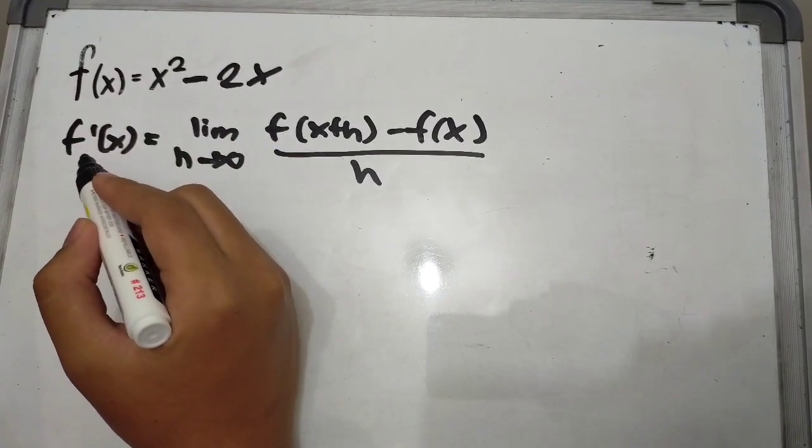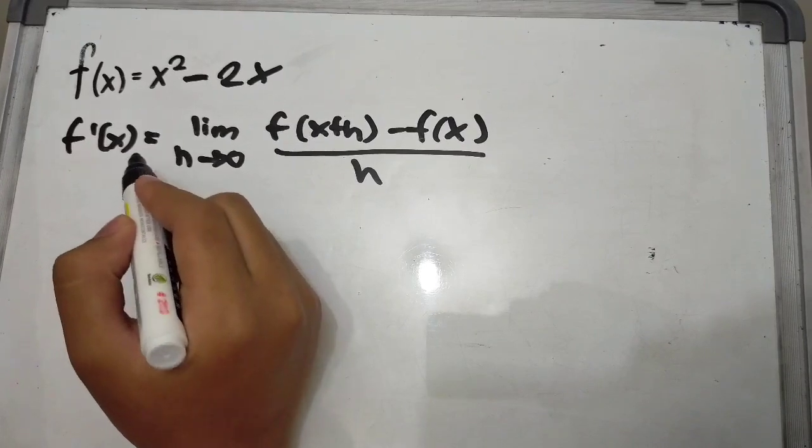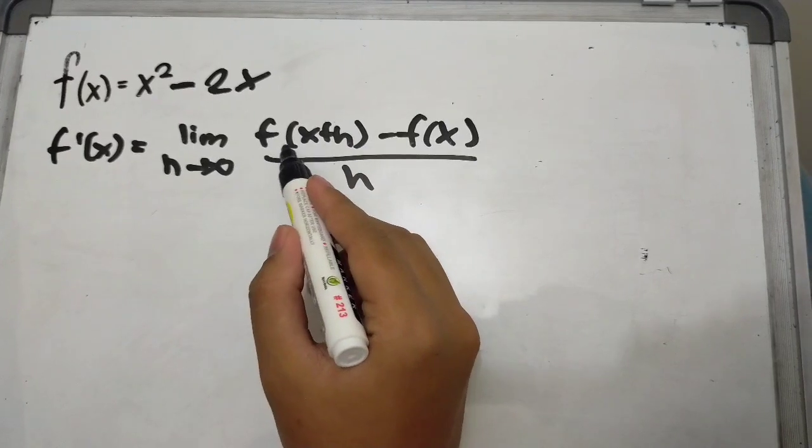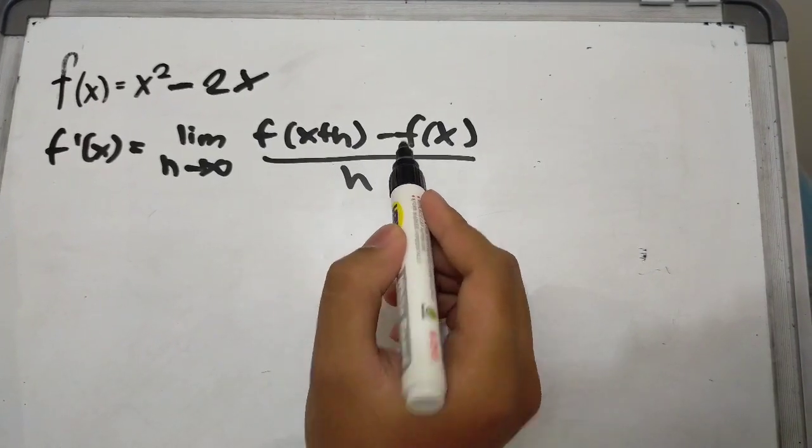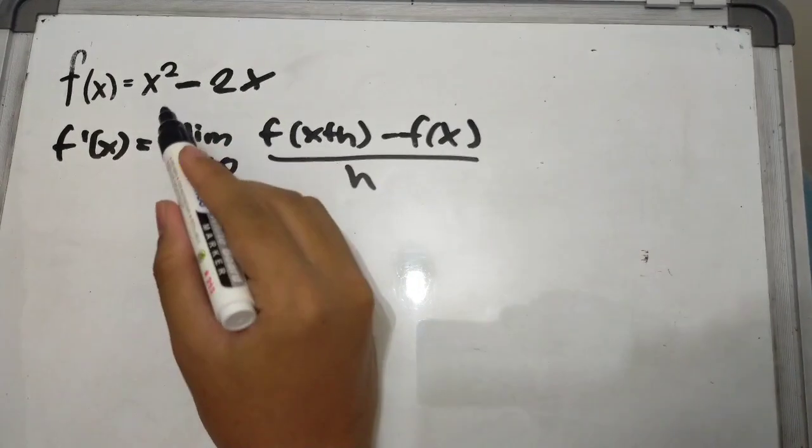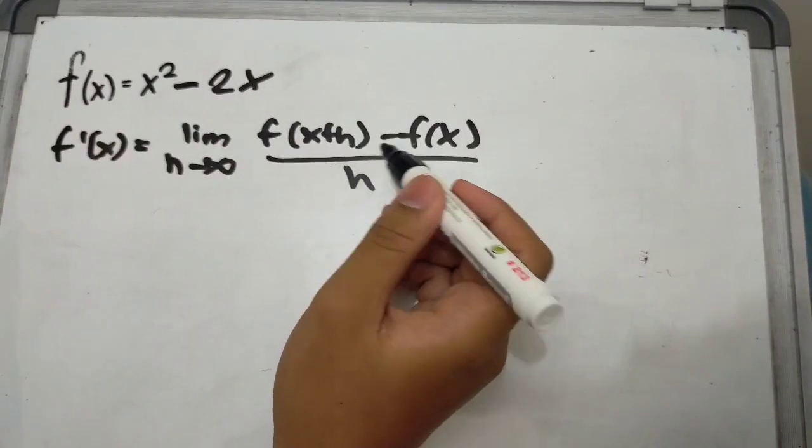f'(x) equals the limit as h approaches zero of f(x + h) minus f(x) divided by h. So we will replace x with x + h.